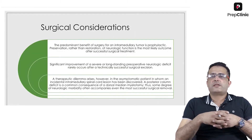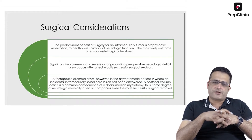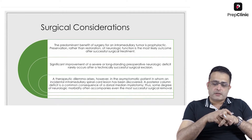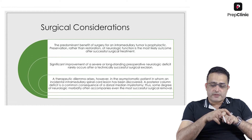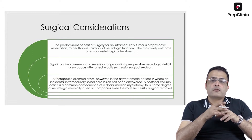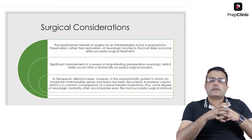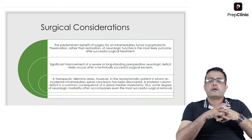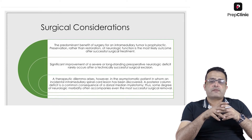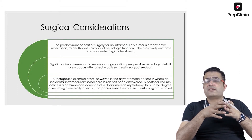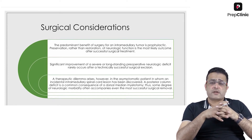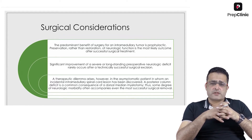We must discuss the surgical considerations in patients with intramedullary spinal cord tumors. We must understand — and make the patient understand — that the predominant benefit of surgery for an intramedullary tumor is prophylactic, aimed at preservation of neurological function rather than restoration of lost neurological function, which is the most likely outcome of successful surgical management in these cases.